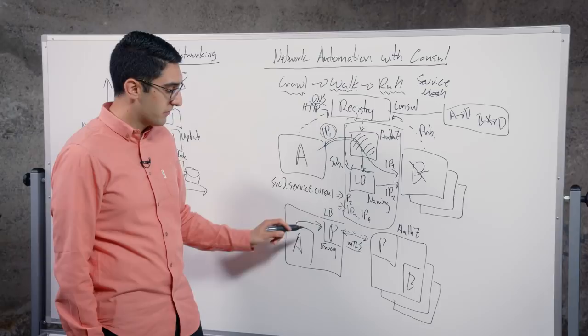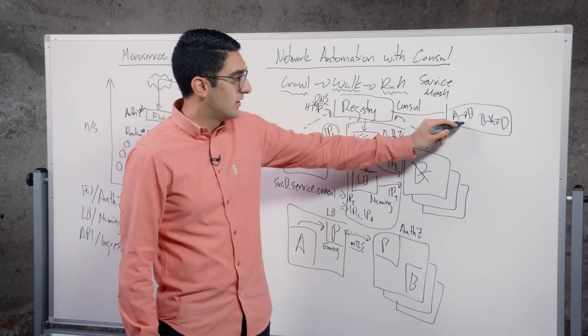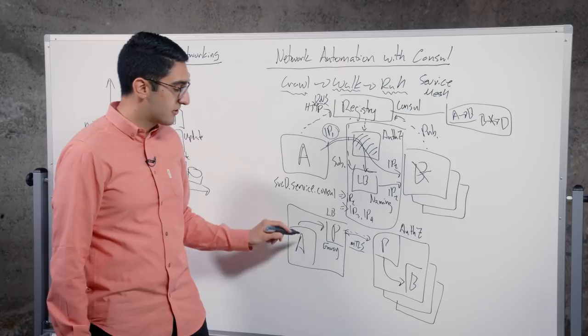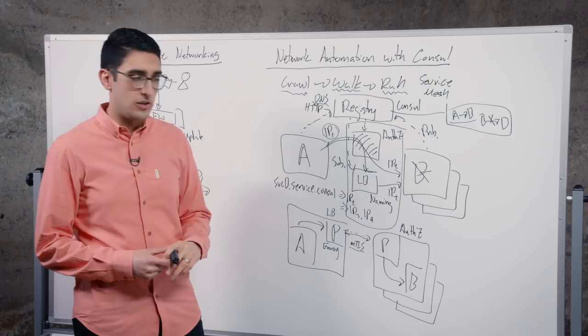The receiver can check, is there a rule that allows A to talk to B? If so, great, allow the traffic back. And now A is talking to B through these two proxies. If not, we close the connection and fire off an audit trail saying some random app A just tried to talk to me. It shouldn't be allowed to talk to me.